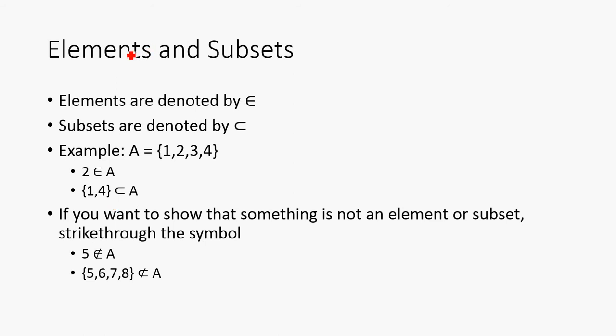So, next I'm going to talk about elements and subsets. Elements are denoted by this symbol here, and subsets are denoted by this symbol right here. Note that sometimes you'll also see this symbol with a line underneath it. That means subset or equal, just like greater than or equal to, we'll have subset or equal to, just with the line underneath.